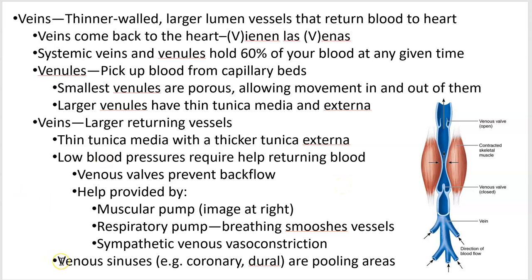Blood can also pool in venous sinuses, which are zero-pressure, very thin-walled containers of blood surrounded by other tissue. Your coronary sinus is surrounded by cardiac muscle. Your dural sinus in your brain is surrounded by connective tissue and brain, which protects the walls. That is video 2.